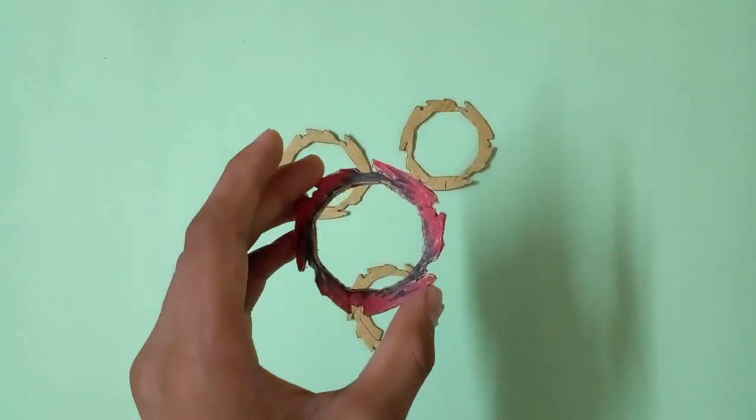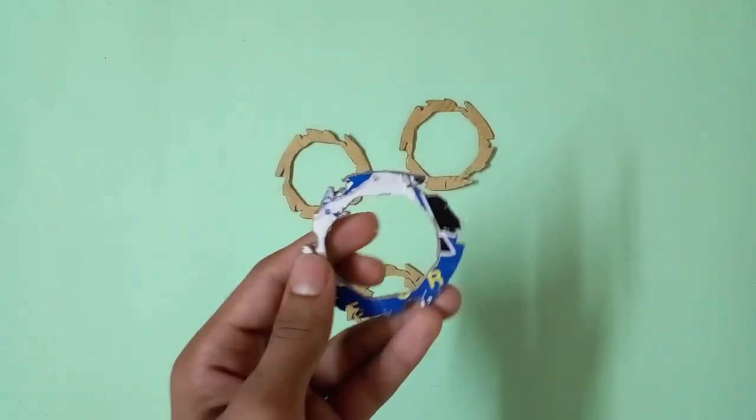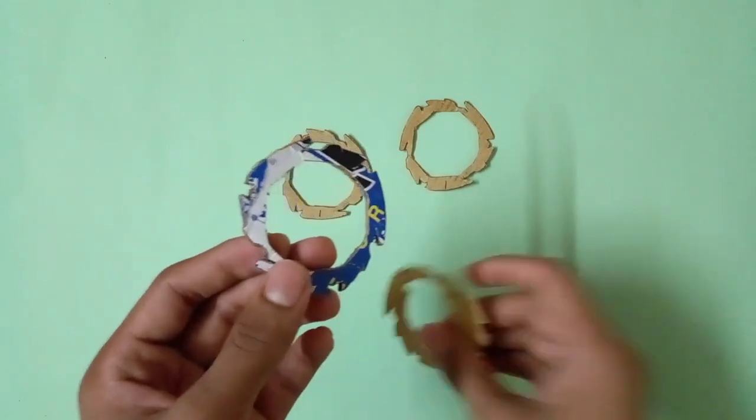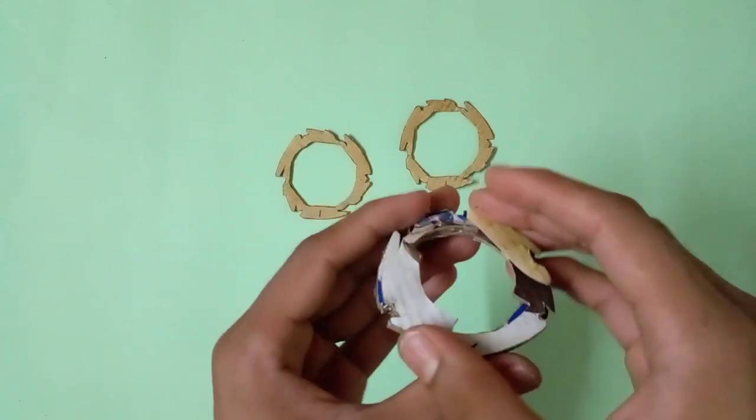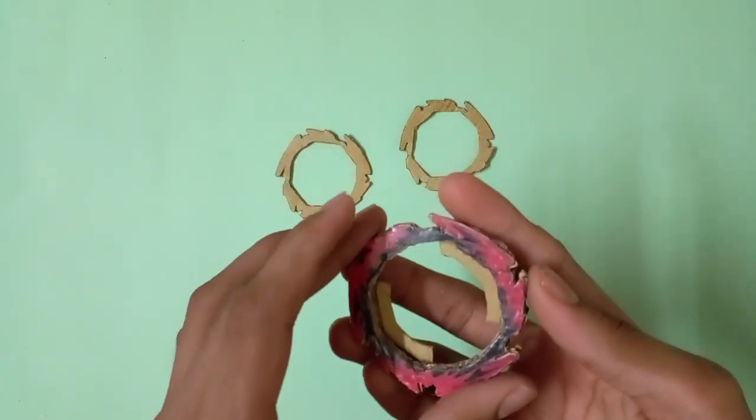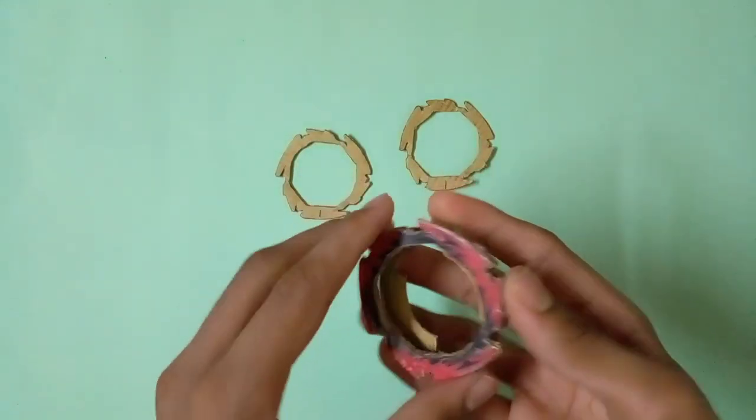So guys, after sticking those two templates on the devil ring, it will look like this as you can see. Now stick this cardboard piece on top like this perfectly with glue. Let me show you that.